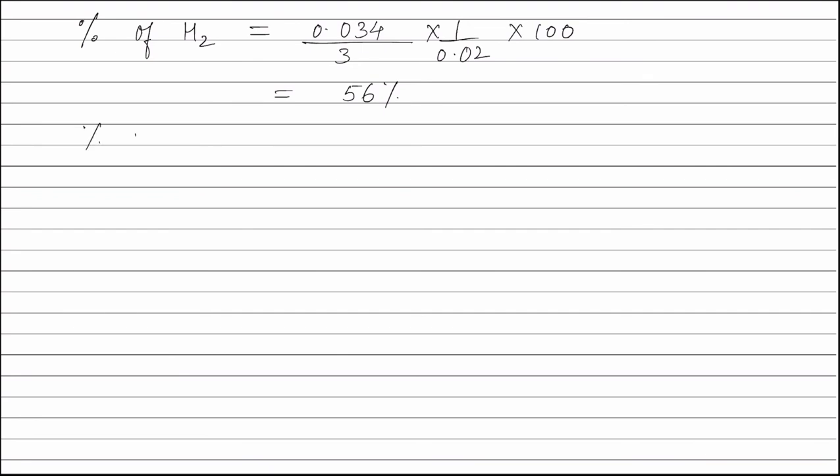Solving this we get the percentage of hydrogen equal to 56% and therefore, percentage of oxygen is equal to 100 minus 56 that is 44%.